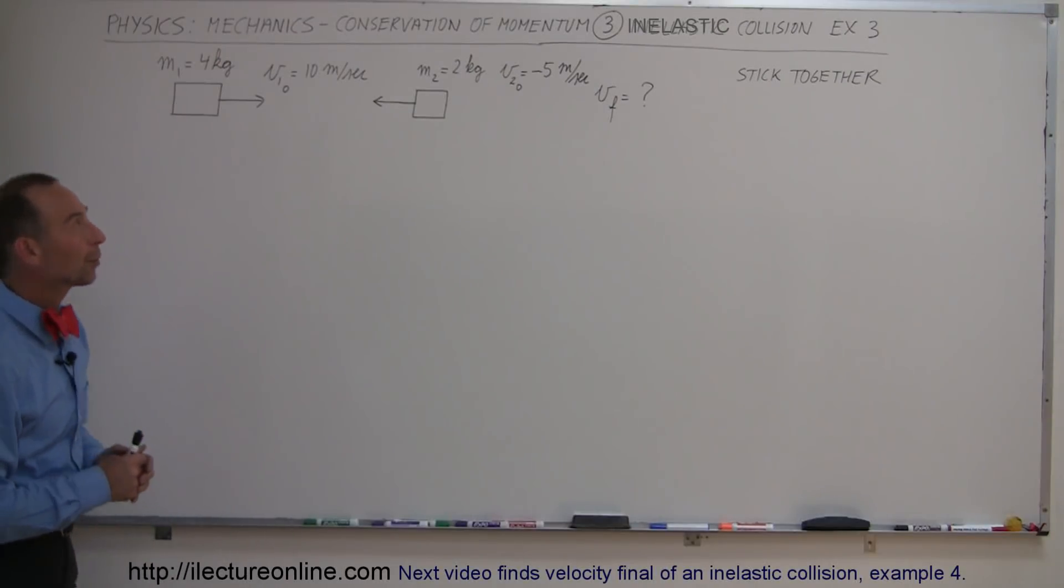For our next example, we now are going to have the second mass moved to the left with initial velocity of 5 meters per second. The first object is still moving to the right at initial velocity of 10 meters per second. The masses are 4 kilograms and 2 kilograms.